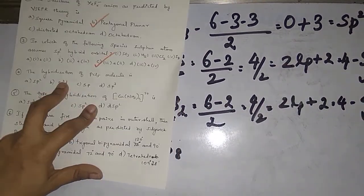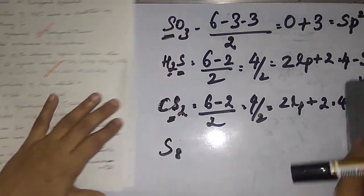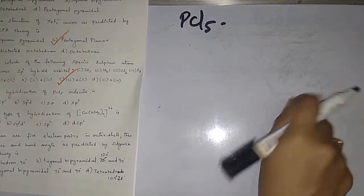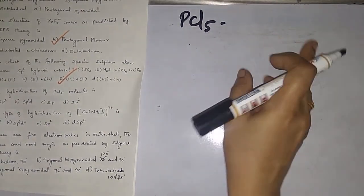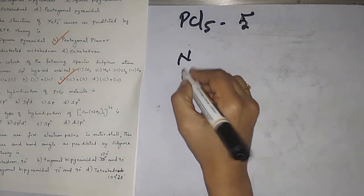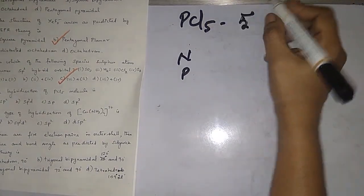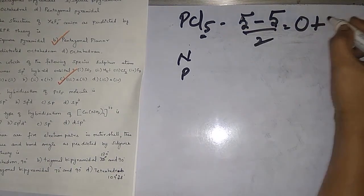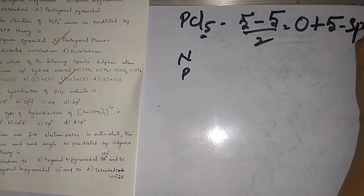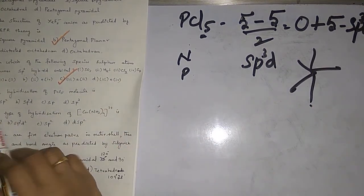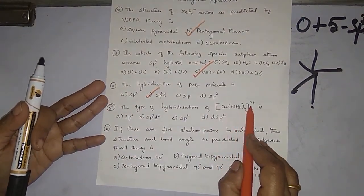Fourth question: hybridization of the PCl5 molecule. Phosphorus has 5 valence electrons, minus 5 bonded atoms divided by 2 = zero lone pairs, plus 5 bonded atoms = 5. Five means sp3d hybridization. The answer is sp3d.